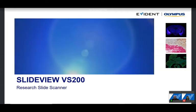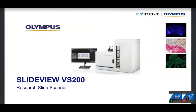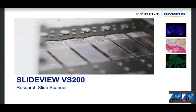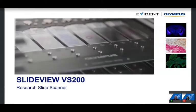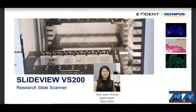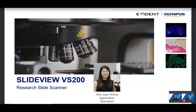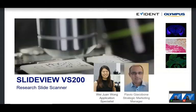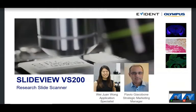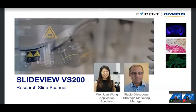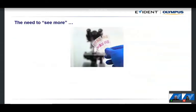Welcome everybody to this presentation about the VS200 research slide scanner from Olympus — also known as Evident, the new name of Olympus, which is why you see two logos. Today Joanne Wong, an application specialist for this system, will join us for a remote demo at the end. I'm Flavio Giacoboni, strategic marketing manager, and I'll introduce the VS200 slide scanner and its advantages for a core facility or anyone who needs to scan a lot of slides.